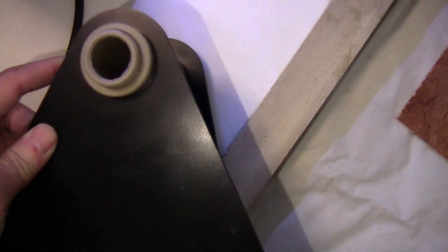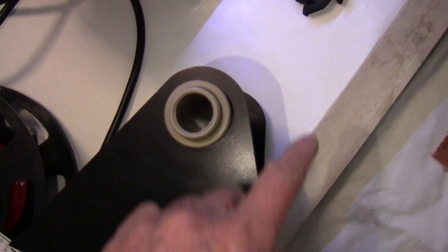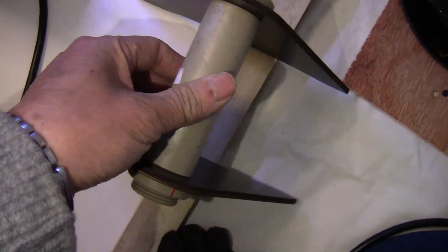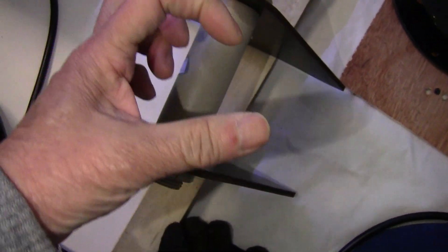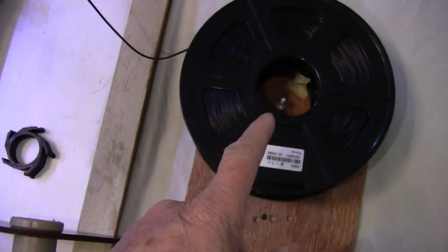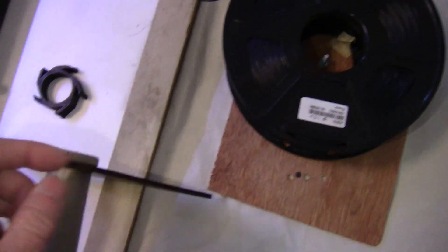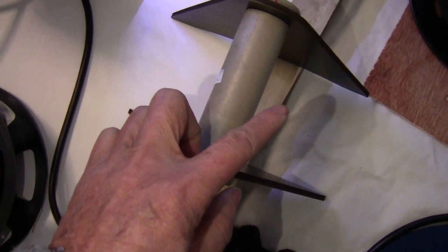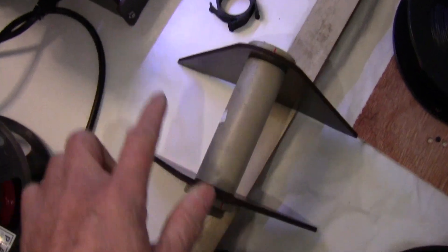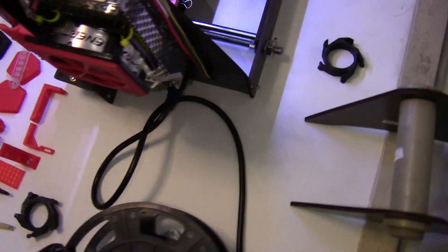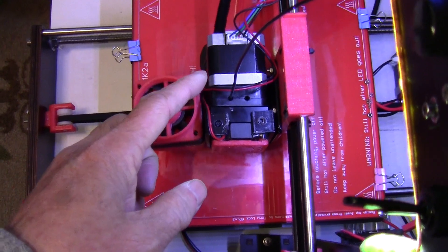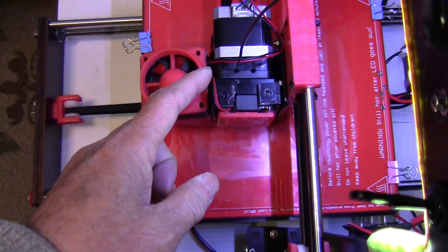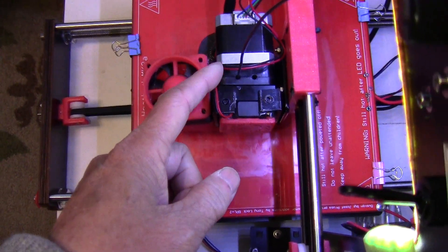When the reel turns on the roller here, this doesn't turn, and because the hole is bigger it sort of flops around. Because when the filament reel is full it's kind of heavy, like 2.2 pounds, it flops around and I would think that puts stress on the stepper motor because you're running it all day.